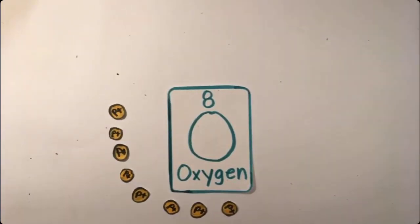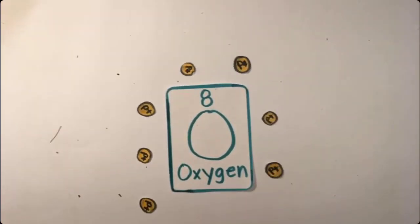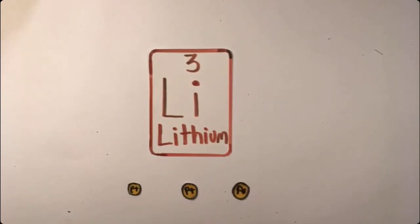Oxygen has eight protons. Abundance of elements in the universe is based on nuclear stability, but what makes some elements, like oxygen, more stable than others, like lithium, which has three protons?